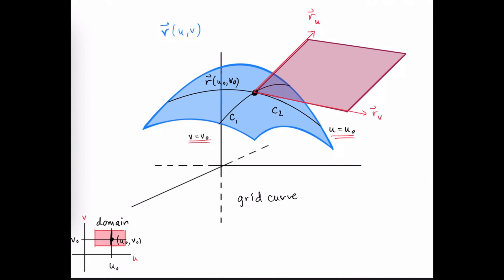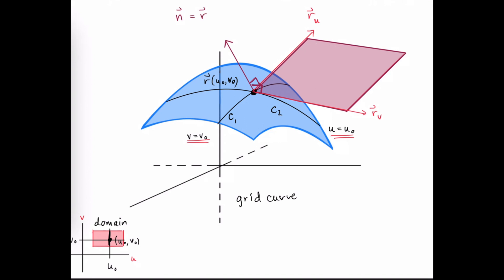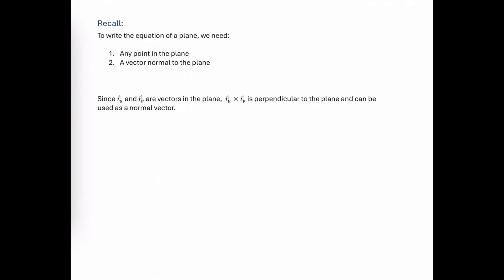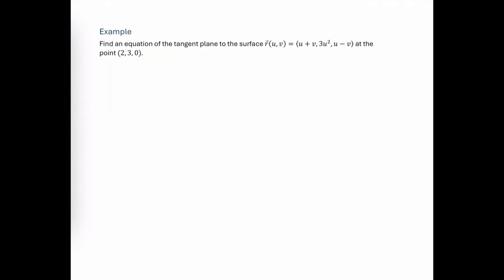Since we have two vectors in the tangent plane, we can look at their cross product. The vectors used in that cross product are the first partial of the vector function with respect to u, crossed with the first partial with respect to v. To obtain those partial derivatives, we take the partials of each individual component and evaluate them at the domain element that generates the point of tangency. To write the equation of any plane, we need a point in the plane and a vector perpendicular to it — we'll use the cross product of the two partial derivatives as our perpendicular vector.